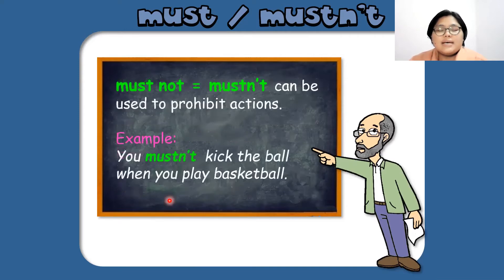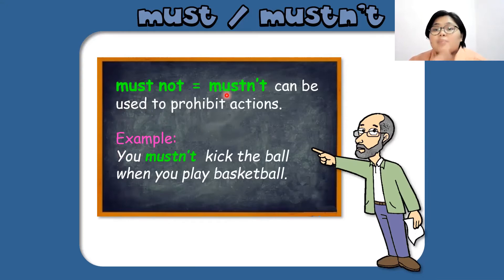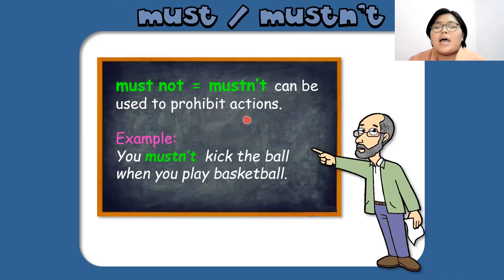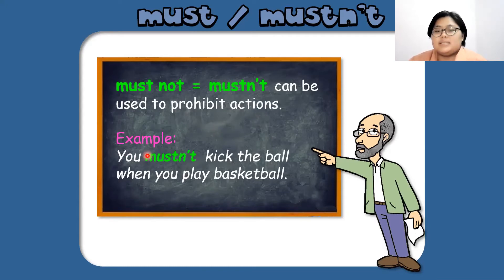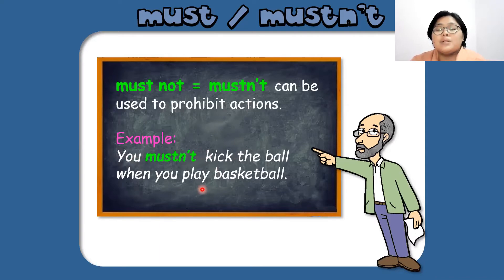Now let's have must not. The negative form of must is by putting 'not' — must not. The short form is mustn't. Repeat after me: mustn't. Mustn't can be used to prohibit actions, to stop the actions. For example, 'You mustn't kick the ball when you play basketball' — you are prohibiting him or her to kick the ball when playing basketball.